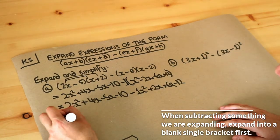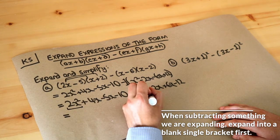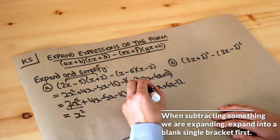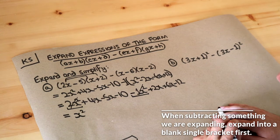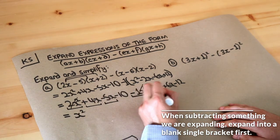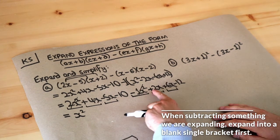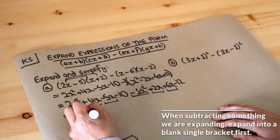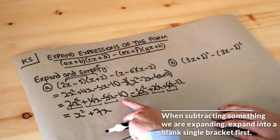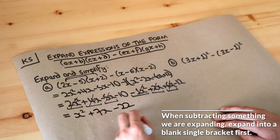Now we just collect like terms. For x squared terms: 2x squared minus x squared gives x squared. For x terms: 4x minus 5x plus 2x plus 6x — that's 4 minus 5 is minus 1, plus 2 is 1, plus 6 is 7 — so plus 7x. And the constant terms: minus 10 minus 12 is minus 22. So the final answer is x squared plus 7x minus 22.